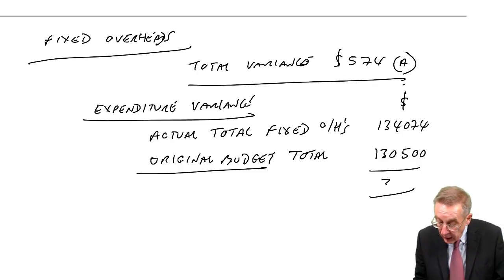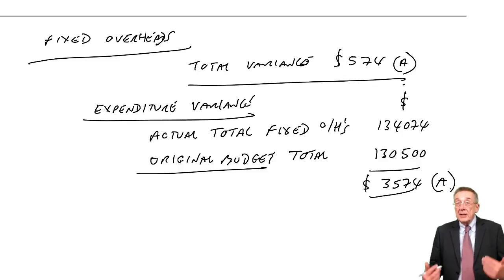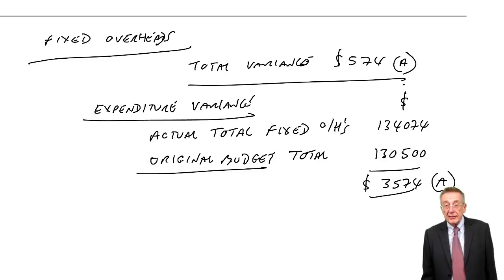we should have spent $130,500. We've actually spent $134,074. Something's gone wrong. We've overspent the difference. 3,574. We've overspent. That on its own would reduce the profit.